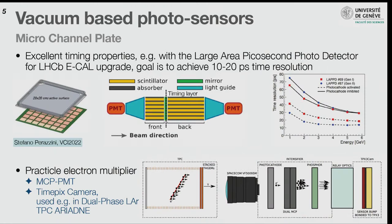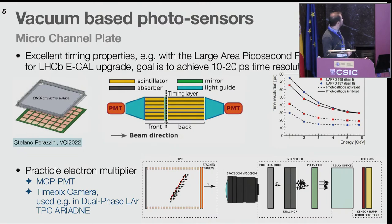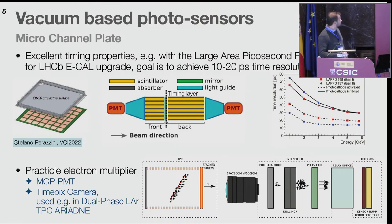The second vacuum-based photo sensor I'd like to mention is the micro channel plate. This is still very much used and very interesting when it comes to timing. One example is the planned upgrade of the LHCb electromagnetic calorimeter, using large-area picosecond photosensors of 20×20 cm². Results show better than 20 picoseconds above 5 GeV — very interesting. They also make a very nice electron multiplier usable in other detectors.